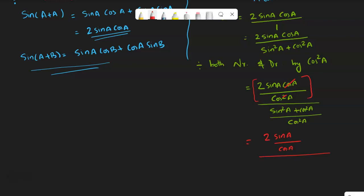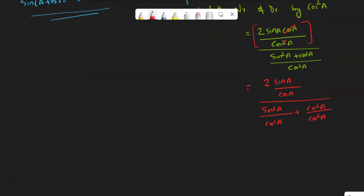Divided by - I am splitting the denominator into two pieces - sin square a by cos square a plus cos square a by cos square a. This is very good, this is a very good piece.